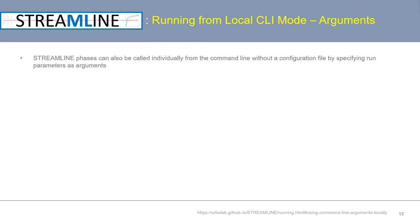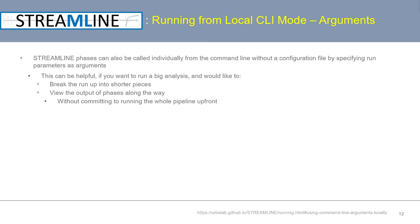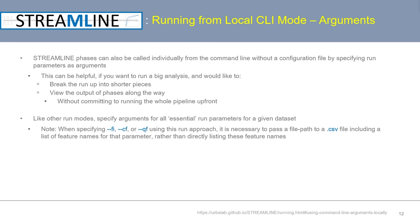Moving on, we're going to talk about running Streamline locally from the command line using command line arguments rather than a configuration file. This can be helpful if you want to run a large analysis one phase at a time, or to view the output of phases along the way without committing to running the whole pipeline upfront. When specifying the command line argument parameters fi, cf, or qf — which allow users to specify feature names to ignore, specify as categorical, or specify as quantitative — you'll need to specify the file path to a CSV file containing the list of feature names for that parameter.